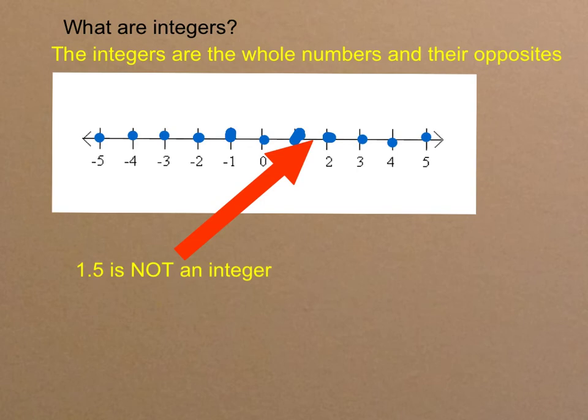Nor are any fractions or mixed numbers. Anything that occurs between positive whole numbers or between their opposites is not an integer. Integers are positive and negative whole numbers. Thank you.